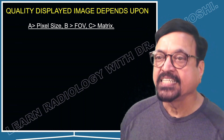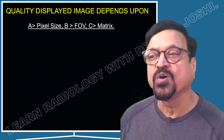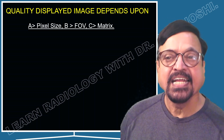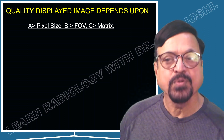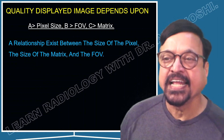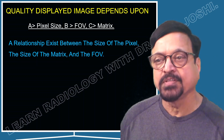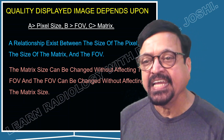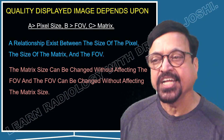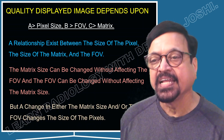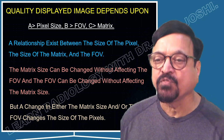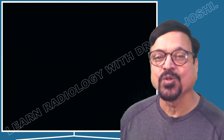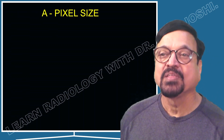There are three important aspects in any image: pixel, field of view (FOV), and matrix — with pixel and voxel often taken together. A relationship exists between the size of the pixel, the size of the matrix, and the field of view. The matrix size can be changed without affecting the FOV, and the FOV can be changed without affecting the matrix size; however, a change in either the matrix size or FOV will change the size of the pixel. This will be explained further with a diagram at the end of the lecture.